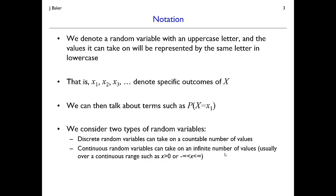We're going to denote the random variable itself with an uppercase letter. When we think about a numerical value that random variable could take, we'll use the same letter in lowercase, or plug in a numerical value directly. So capital X is the random variable, and small x1, x2, x3 and so on would be numerical values it could take. We'll talk about the probability that random variable X equals some numerical value x1, or specifically, the probability that X equals 3, for example.